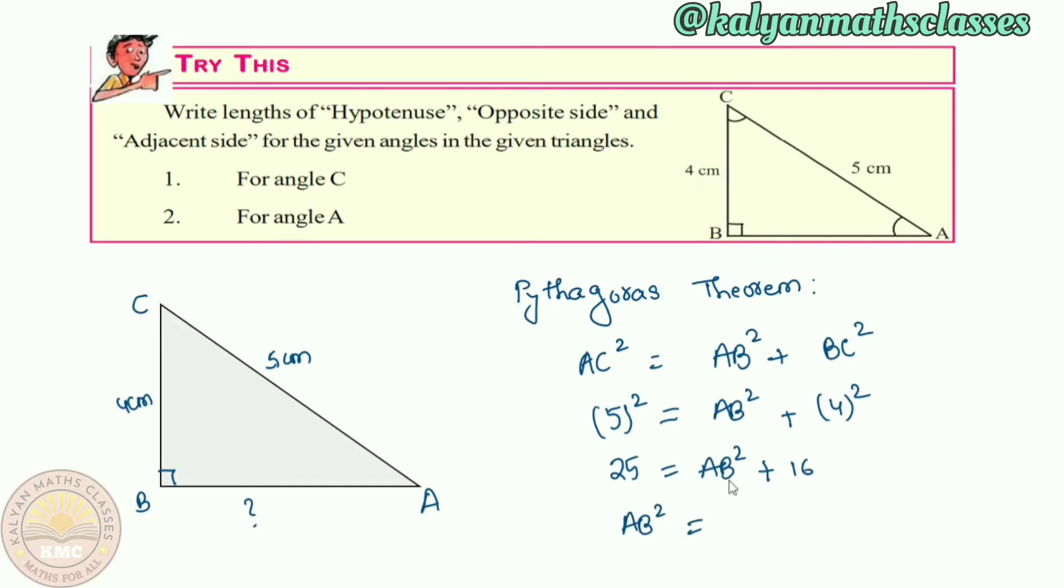Now here, we isolate AB squared. AB squared equals 25 minus 16, which equals 9. So AB equals root 9. So the value is 3. So AB value is 3 centimeters.